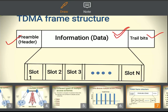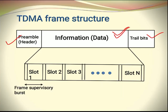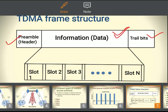The information data consists of N number of bursts — slot 1, slot 2, slot 3, up to N slots. Out of these N slots, the first slot is called the frame supervisory burst, which is useful for identification and synchronization purposes. The remaining N minus 1 time slots are used by the ground or base station for transmission — from slot 2 onwards up to slot N — within which the actual information is transmitted.